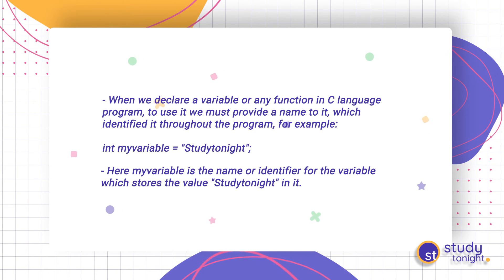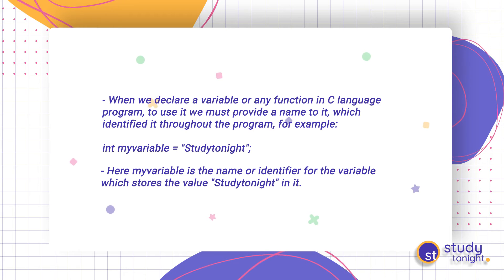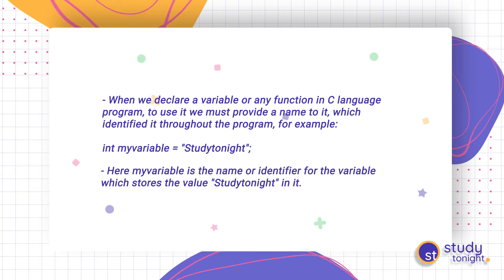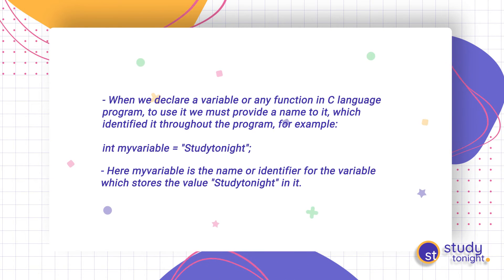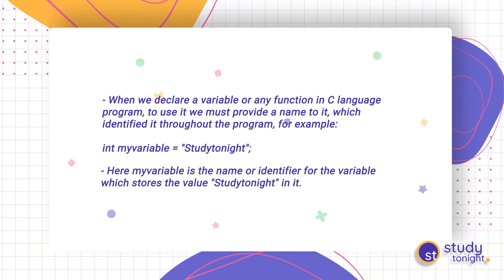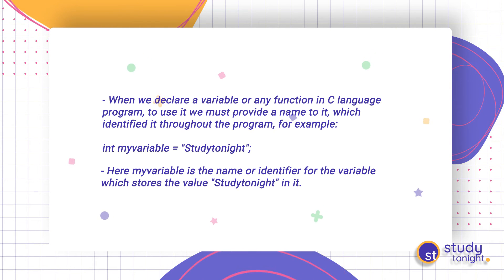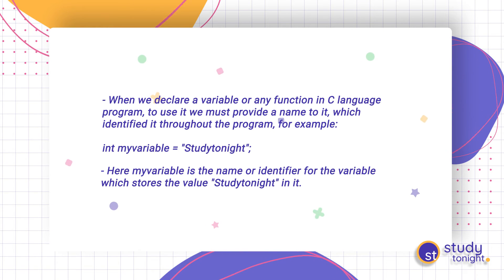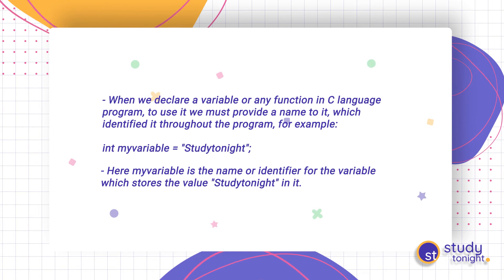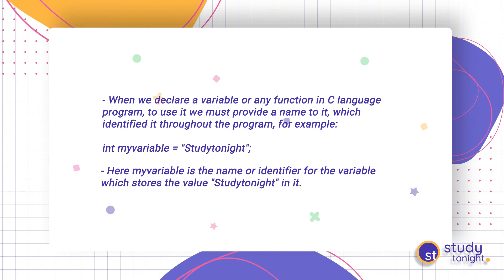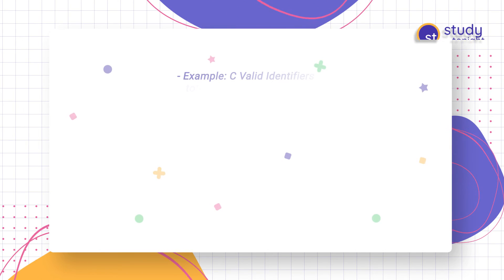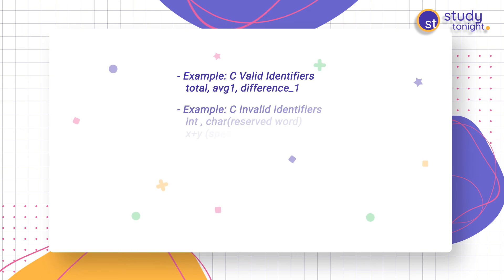When we declare a variable or any function in a C language program, we must provide a name to it which identifies it throughout the program. For example, if we are storing a value in a variable, we must give a name to that memory location. So we have given the value 'study tonight' a name called 'my_variable', which is of integer type. Here, my_variable is the identifier for the variable which stores that value. Now there are some examples of valid and invalid identifiers.